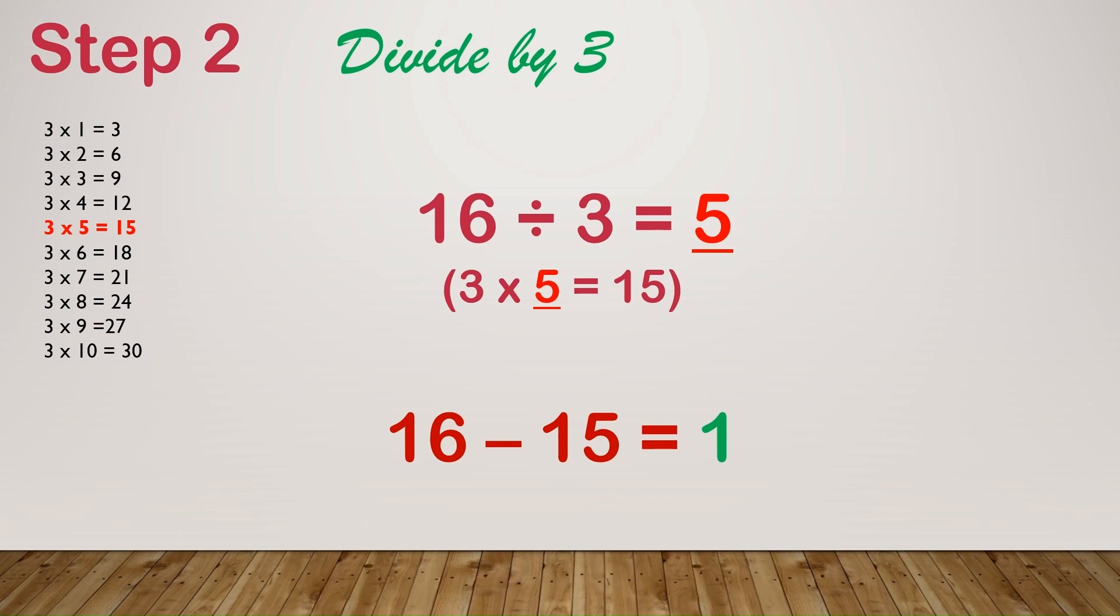Now we will do the second step of the trick and divide by 3. So 16 divided by 3 will give us the answer 5 with the remainder 1. The number 5 is the second digit of our answer.